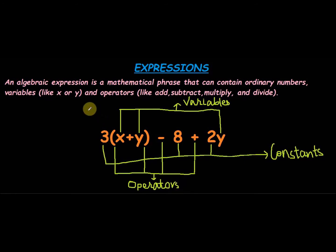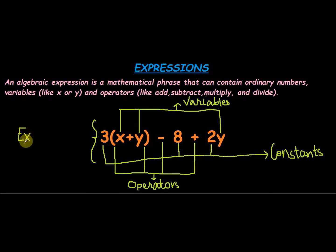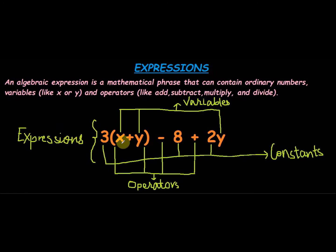This entire thing — that is 3 bracket x plus y bracket close, minus 8 plus 2y — this entire thing is called an expression. An expression differs from an equation, and do remember that an equation and an expression are not the same thing. So this entire thing is called an expression.